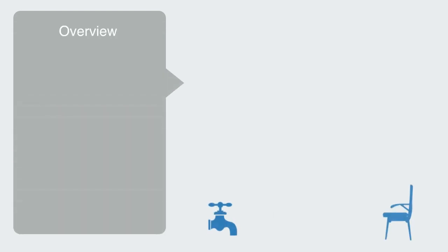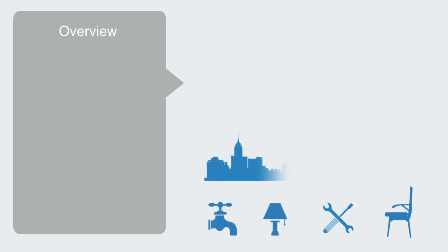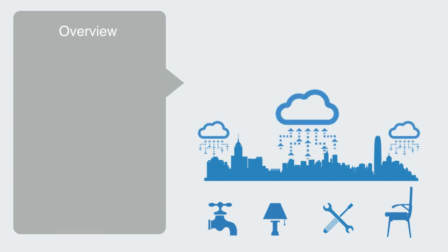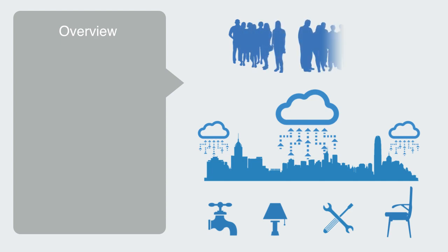So far in this section of the course, we've talked about basic technologies, the complex engineered systems we get out of the aggregation of many different technologies, and the information systems that increasingly control and operate all this technology. In this module, we'll be completing the first section of the course by adding the social domain to this model.